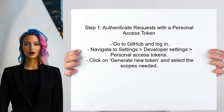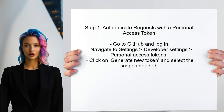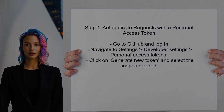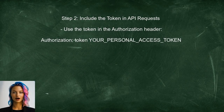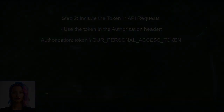To address the GitHub API rate limit issue, the user should first consider authenticating their requests. This can be done by creating a personal access token on GitHub. Next, the user needs to include this token in their API requests. This will significantly increase the rate limit for their application.